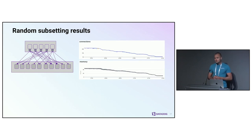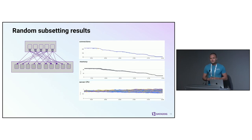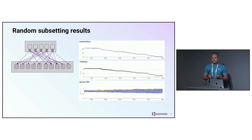We applied random subsetting to a few applications in our infrastructure. The results were great from the perspective that resource utilization on the server went down a lot. But at the same time, load distribution on the server became a lot more imbalanced. If you wonder why we care about this so much, it's because service owners need to scale their deployments to account for the worst case, and this directly correlates with cost. So this is not ideal.